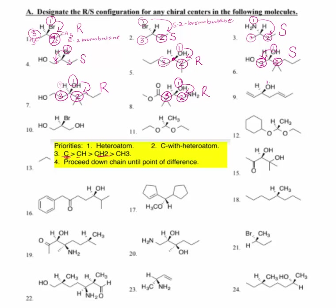Number nine: oxygen is priority number one. Hydrogen is priority number four and it's to the rear, which makes it a little easier. Over here I have a CH2 and I have a CH. This CH has three bonds showing, so CH has a higher priority — it's going to be number two — than the CH2. We rotate counterclockwise. That makes this an S configuration.